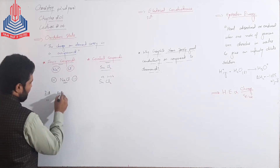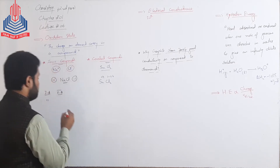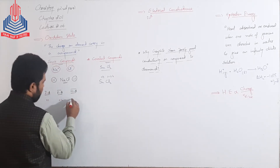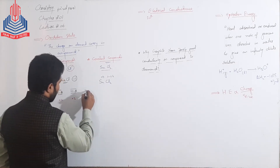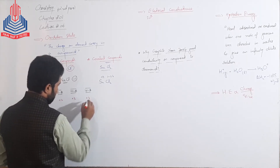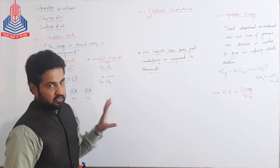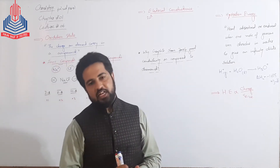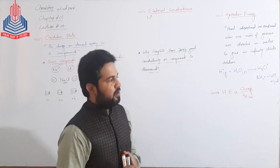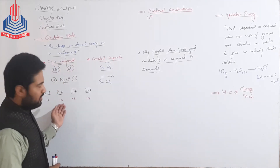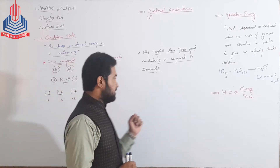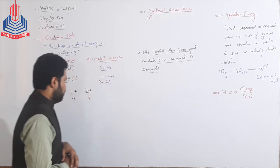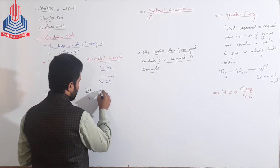Similarly, group second A کی Oxidation State plus two ہوگی، group third A کی plus three ہوگی، اور group four A کی plus four ہوگی۔ Group number four تک، جیسے جیسے ہم left سے right move کریں، Oxidation States depend کرتی ہیں valence shell میں موجود electrons کی number پر۔ Group one میں ایک valence electron ہے تو Oxidation State plus one ہے، group two میں دو ہیں تو plus two ہے، group three میں تین ہیں تو plus three ہے۔